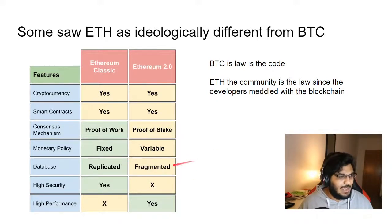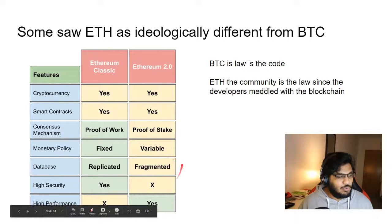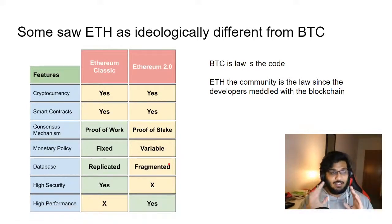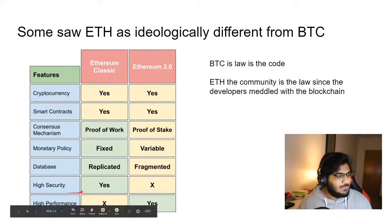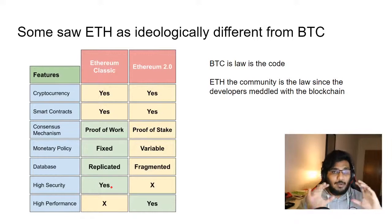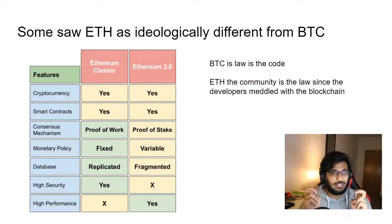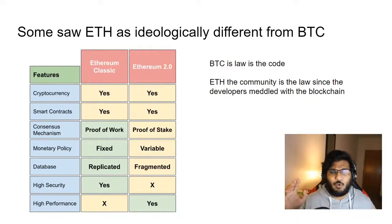Ethereum Classic will always be a replicated database, whereas Ethereum 2.0 will be a fragmented database split into 64 shards — called sharding — with a beacon chain. Ethereum Classic is considered highly secure since no blocks could be changed, whereas Ethereum 2.0 could be seen as less secure since developers can meddle with blocks. In terms of performance, Ethereum Classic will never be high performance with no real upgrades, while Ethereum 2.0 is moving to about 100 transactions per second — roughly four to five times what Visa currently does.